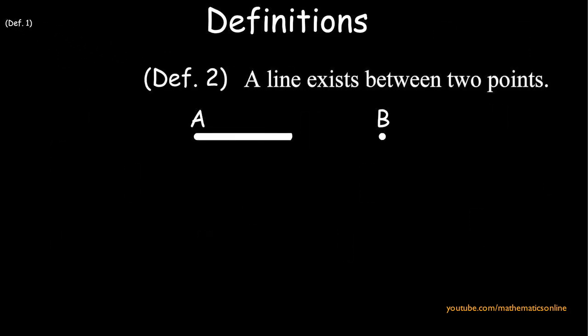Definition number two, a line exists between two points. We call this line AB.